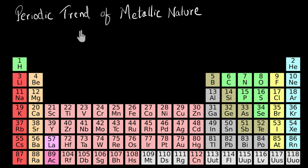Let's see what's the trend of metallic nature in a periodic table — basically, how does the metallic nature vary as we go across a period and down a group?